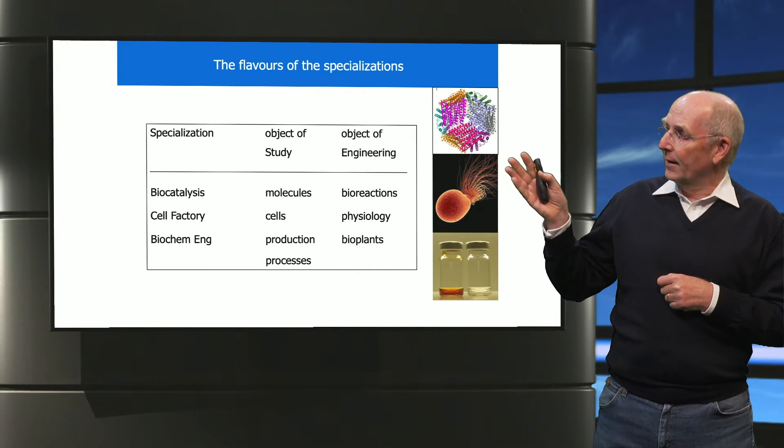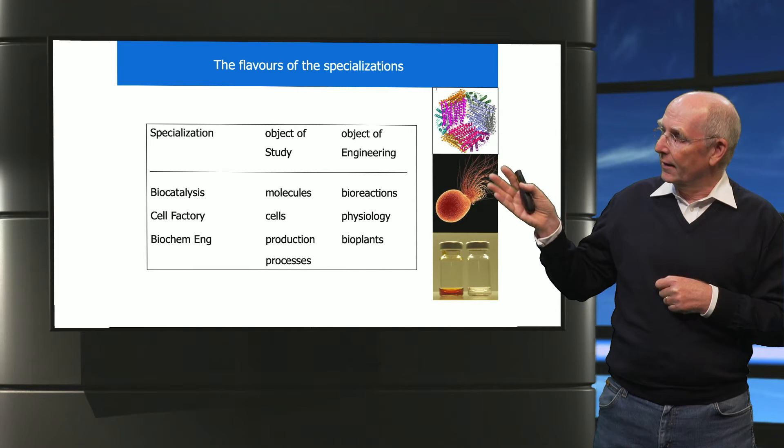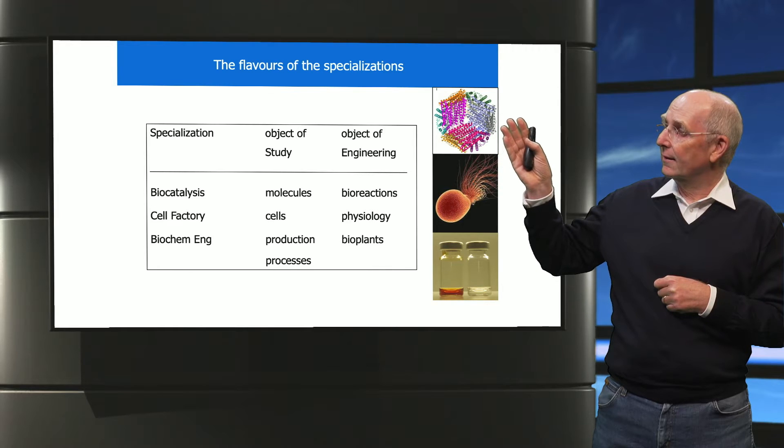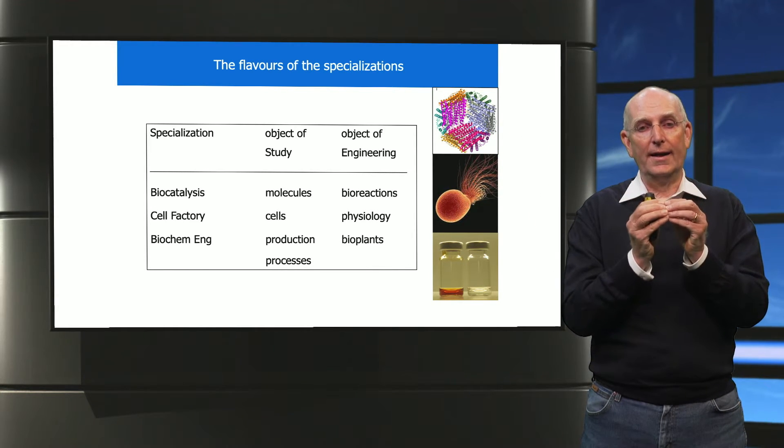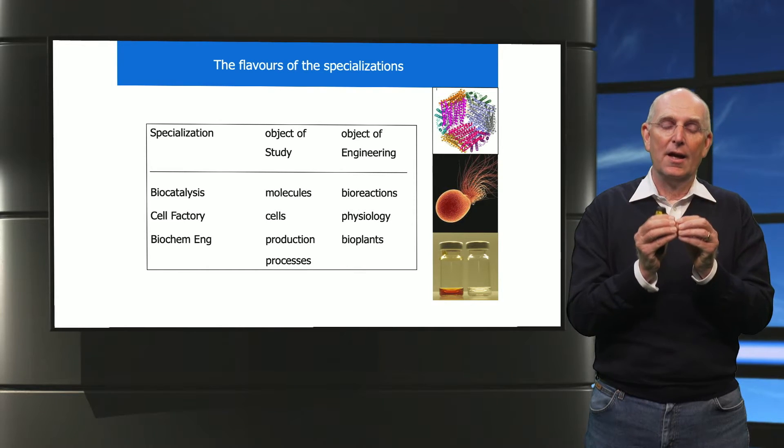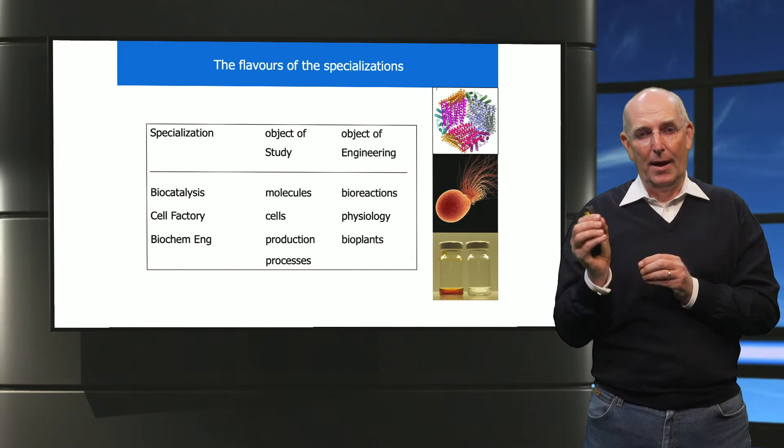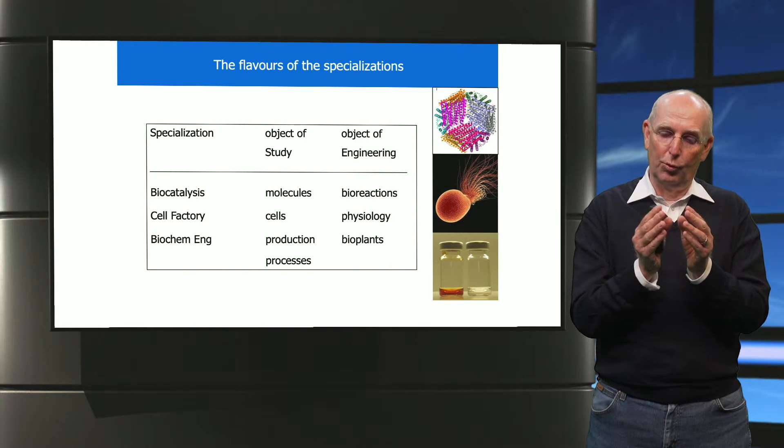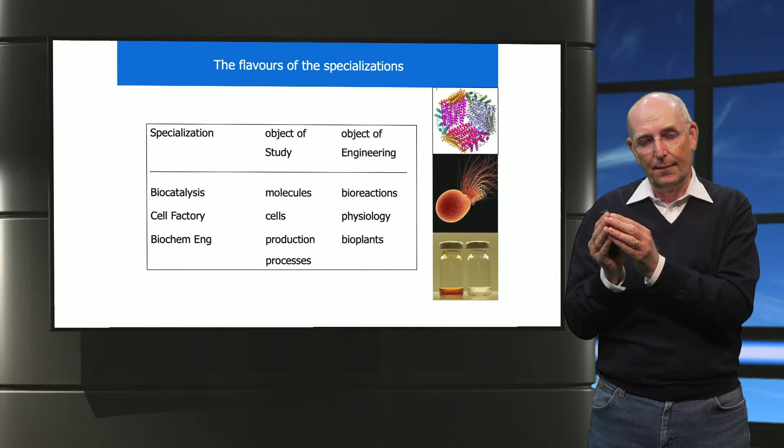These different aspects look at different scales. In biocatalysis you look at enzymes, at organic chemistry catalyzed with enzymes, and at the molecular scale. What you engineer are bioreactions. If you look at the cell factory, you look at the cell and what you engineer are the processes within the cell.